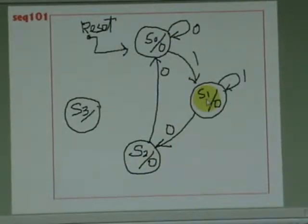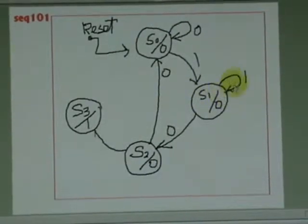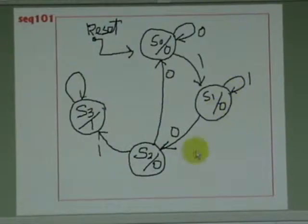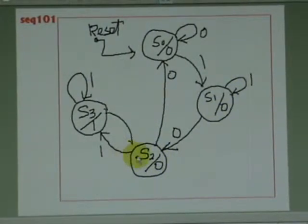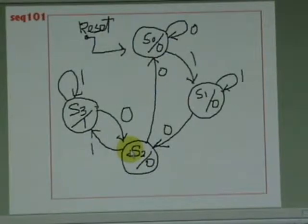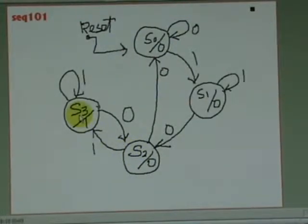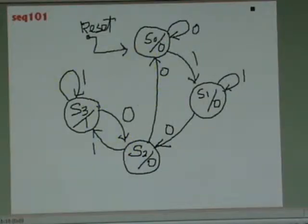In S1, it remained there while the next input is 1. Finally, from S2 if the input is 1, it transitioned to S3 with an output of 1. And the rest of the transition is as shown here.